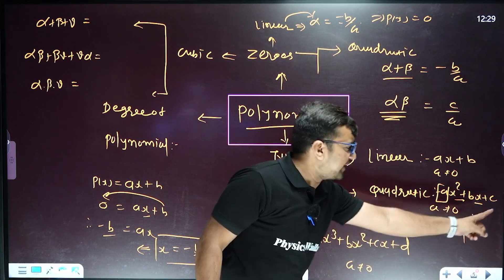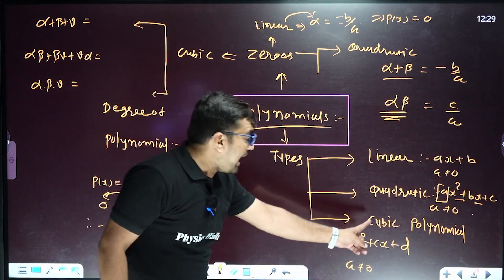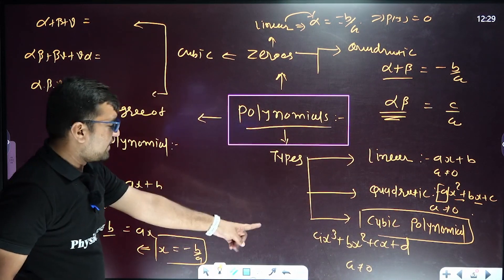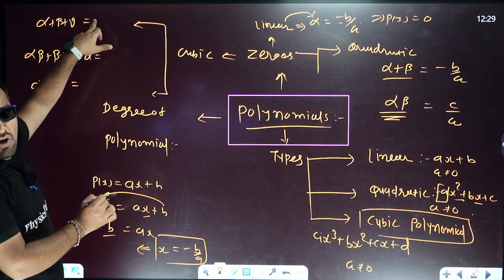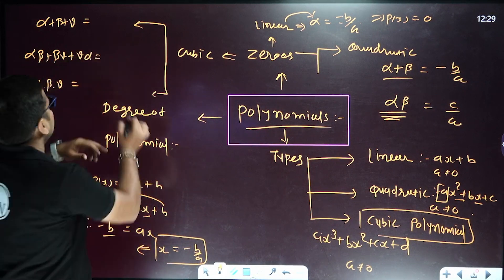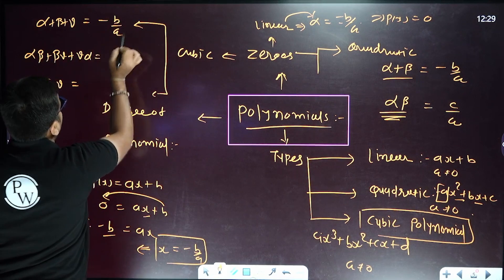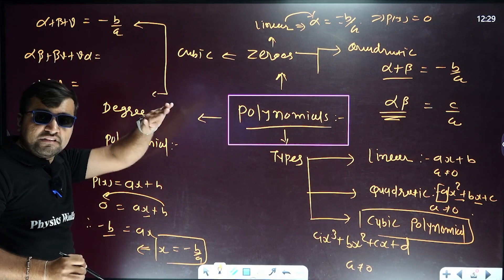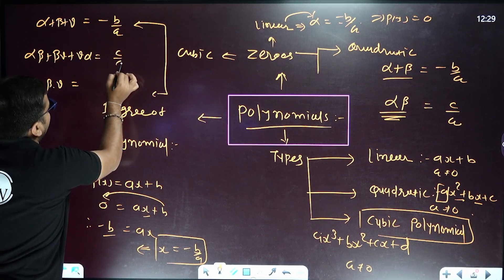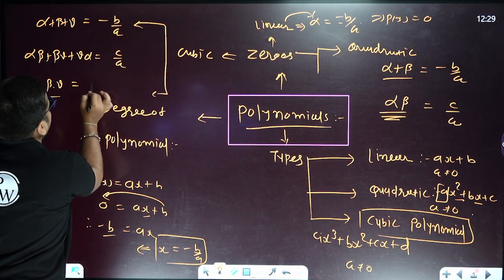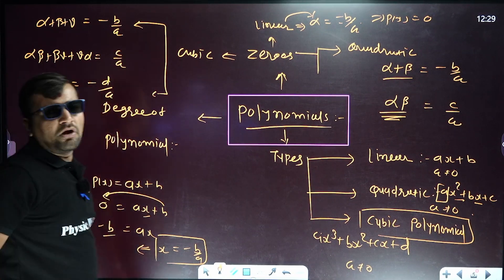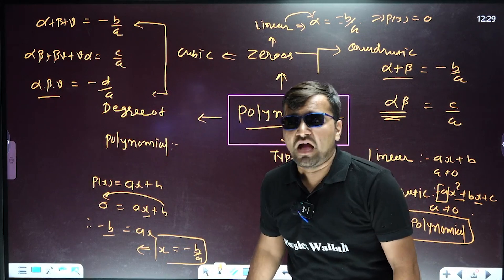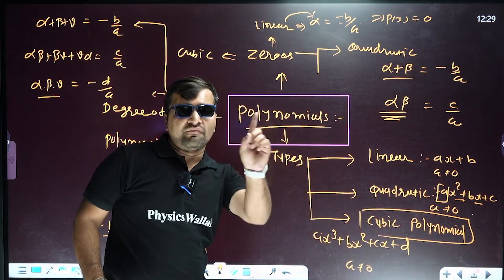For the cubic polynomial, the sum of the three zeros equals minus b upon a. The sum of the products of zeros taken two at a time equals c upon a. The product of all three zeros equals minus d upon a. Remember these carefully.